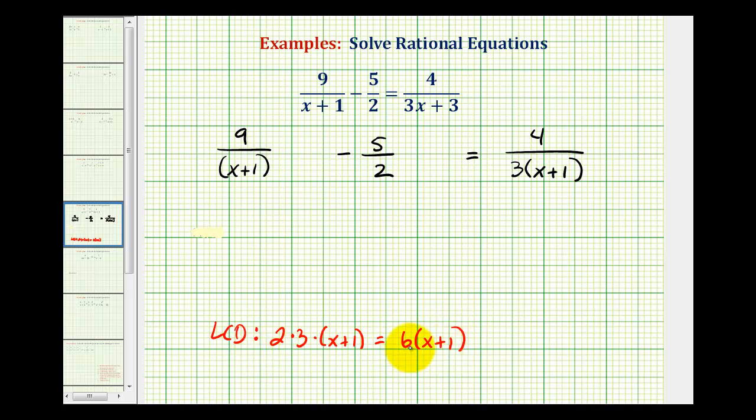Now we're going to multiply each fraction by the LCD. We are not going to obtain a common denominator for each of these fractions, which is often a common error. So we'll multiply each fraction by 6 times the quantity x plus 1 over 1. Remember if we multiply both sides of the equation by the same thing, it does not change the solutions.